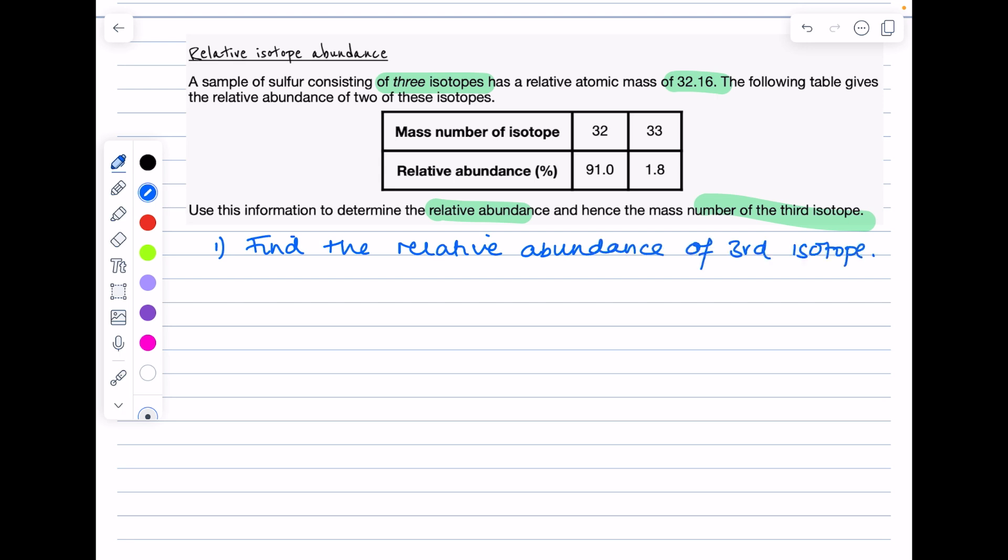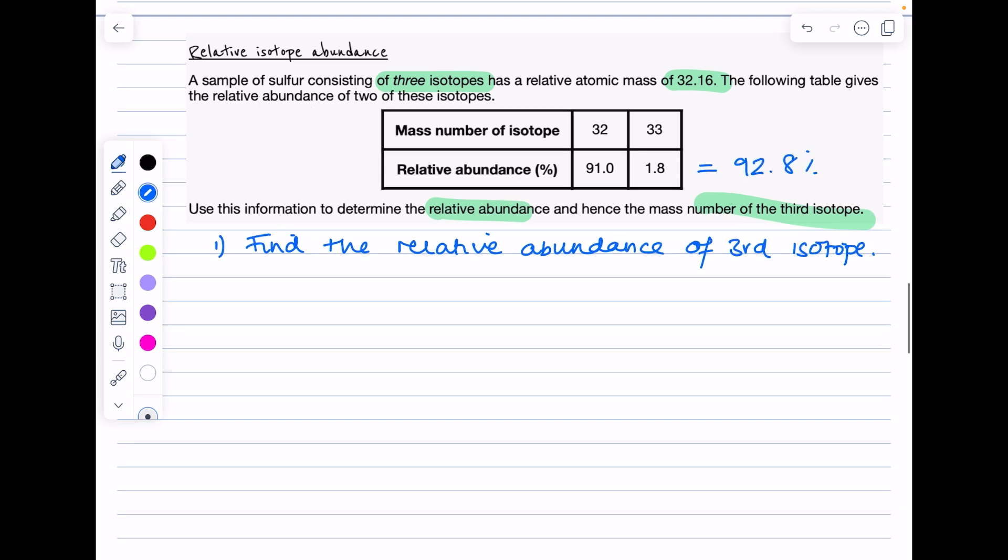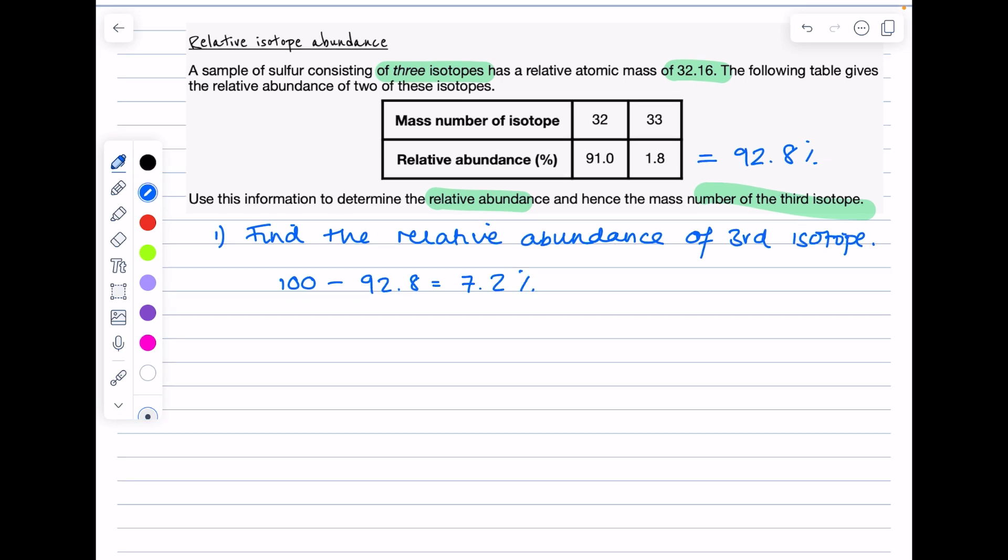First of all, we need to work out the relative abundance of the third isotope, so that really means find its percentage. As I've said, the relative abundances should add up to 100%. So first of all, calculate the total relative abundance here for the other two isotopes. That's simply 92.8%, so we do 100% minus 92.8 to get 7.2%.